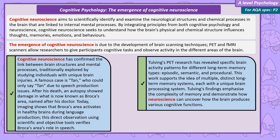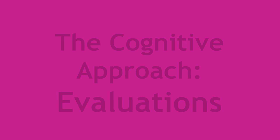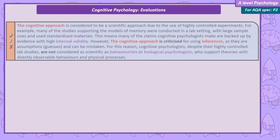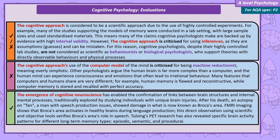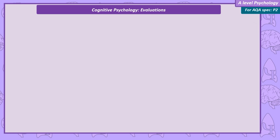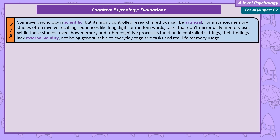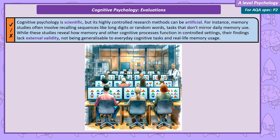Many years later, we can now see brain activation in Broca's area when neurotypical brains produce language, confirming it as a location of speech production. Another example is PET research by Tulving, which revealed activity in separate brain regions when participants recalled episodic, semantic, or procedural memories, supporting cognitive theories that there is more than one type of long-term memory. Evaluating the cognitive approach: the first three evaluations cover cognitive psychology's relationship with science, machine reductionism, and the cutting-edge research in cognitive neuroscience that provides objective biological evidence for theories previously only supported by inference.